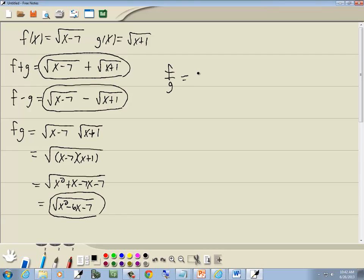Now the division. We'll put the square root of x minus 7 up on top and the square root of x plus 1 down below. And there's no need to simplify that. That's actually our answer.